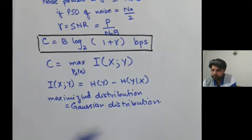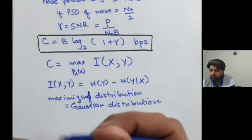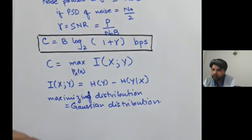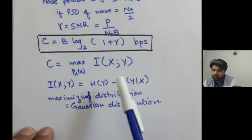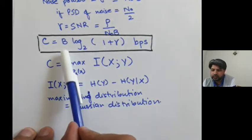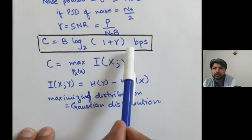And then we proved that if we compute the mutual information, it comes out to be this famous Shannon formula.